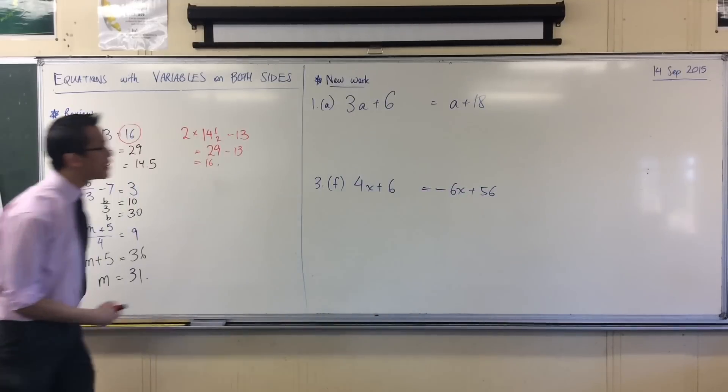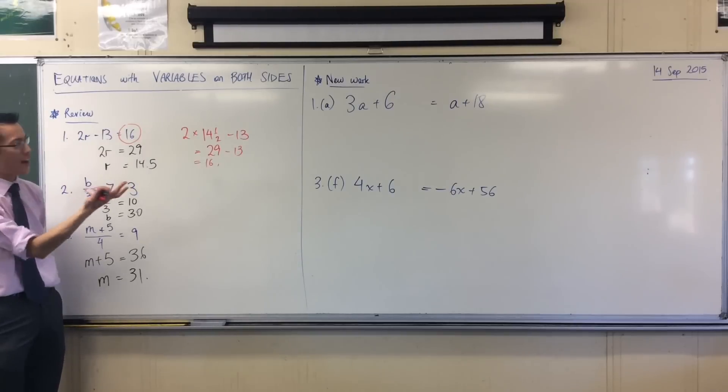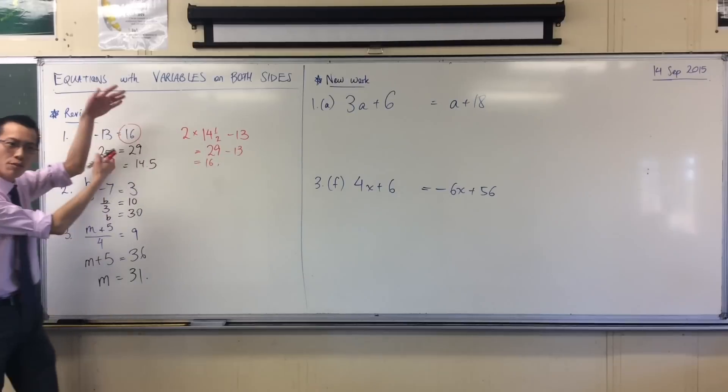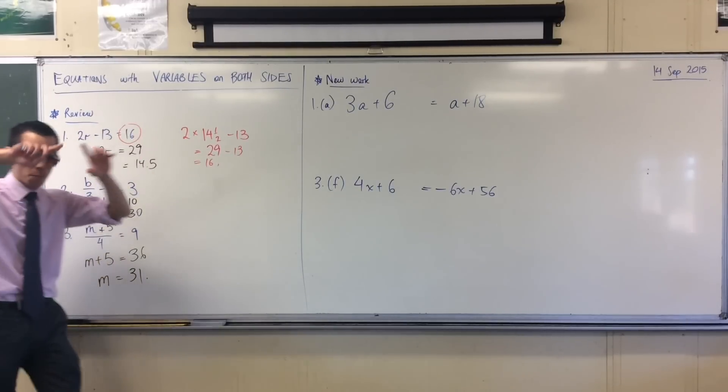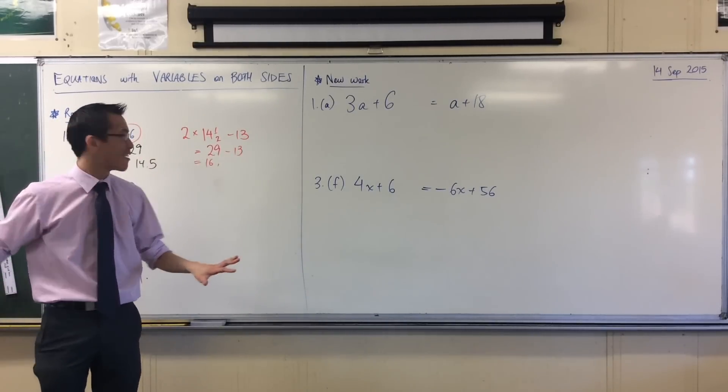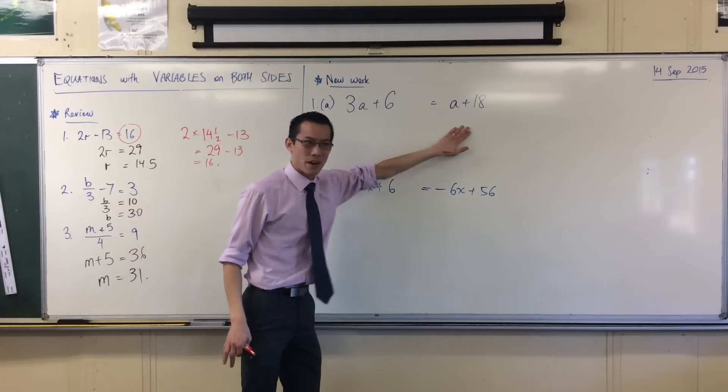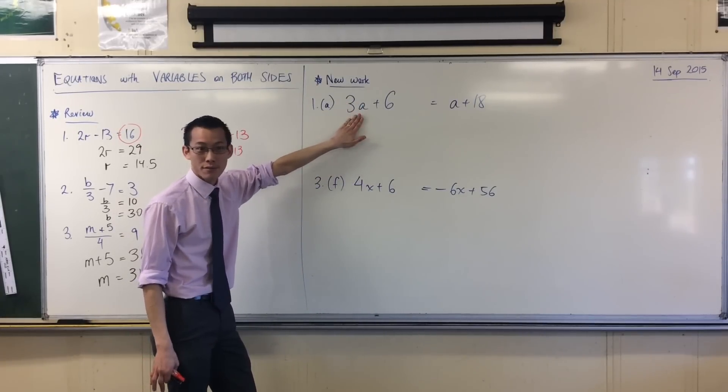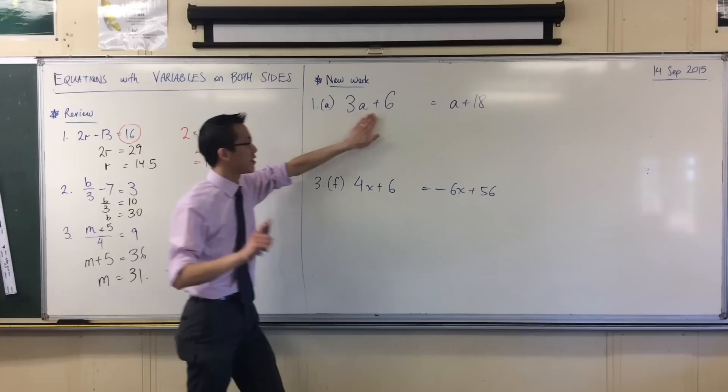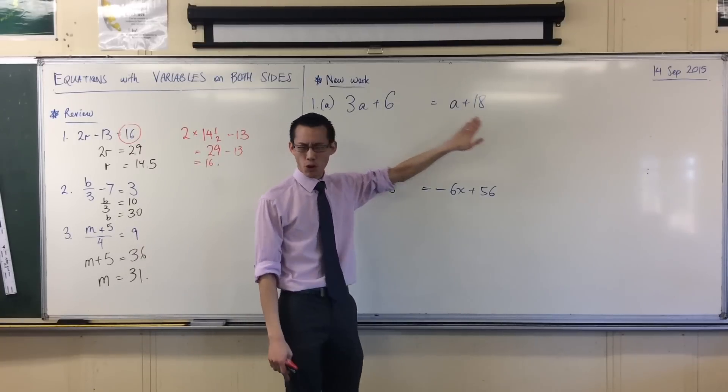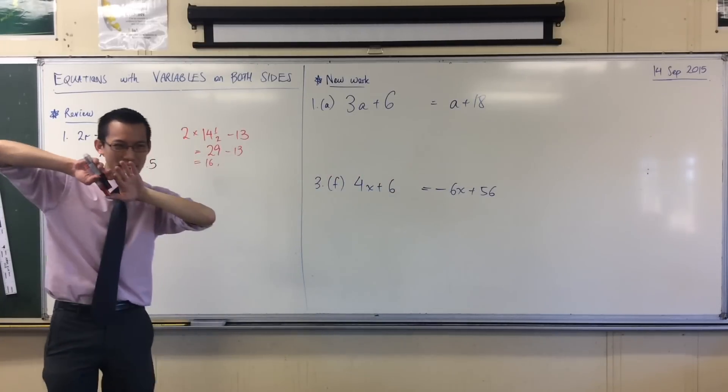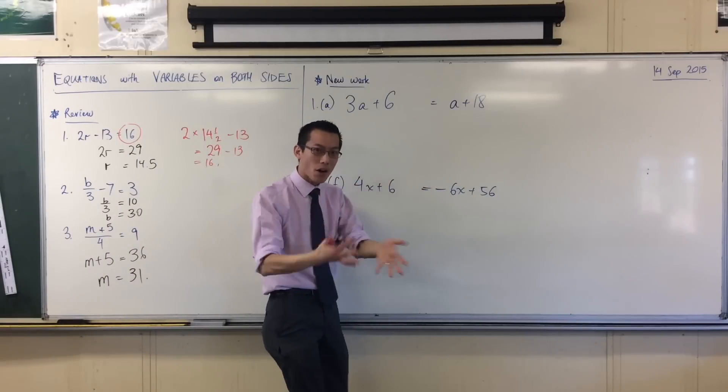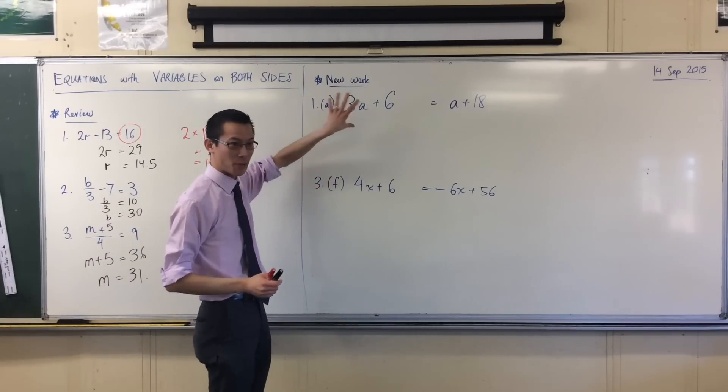Now, let's have a look at these new pieces of work. I say new work, but they're kind of not really new work. They're just like we've been doing before. It's just there's more pieces around the king that we have to get rid of. So what could I do to both sides that would get the king in one spot?